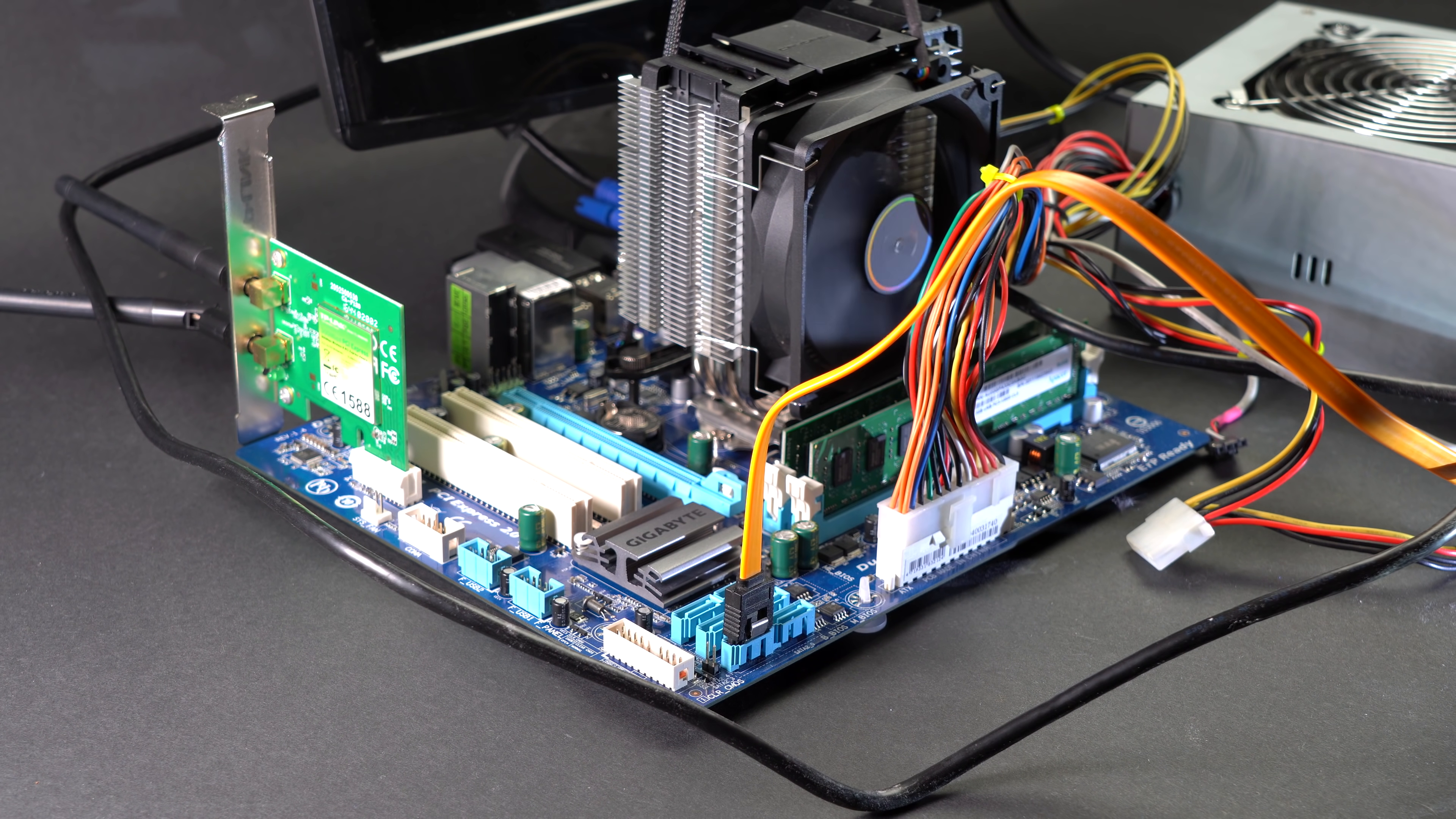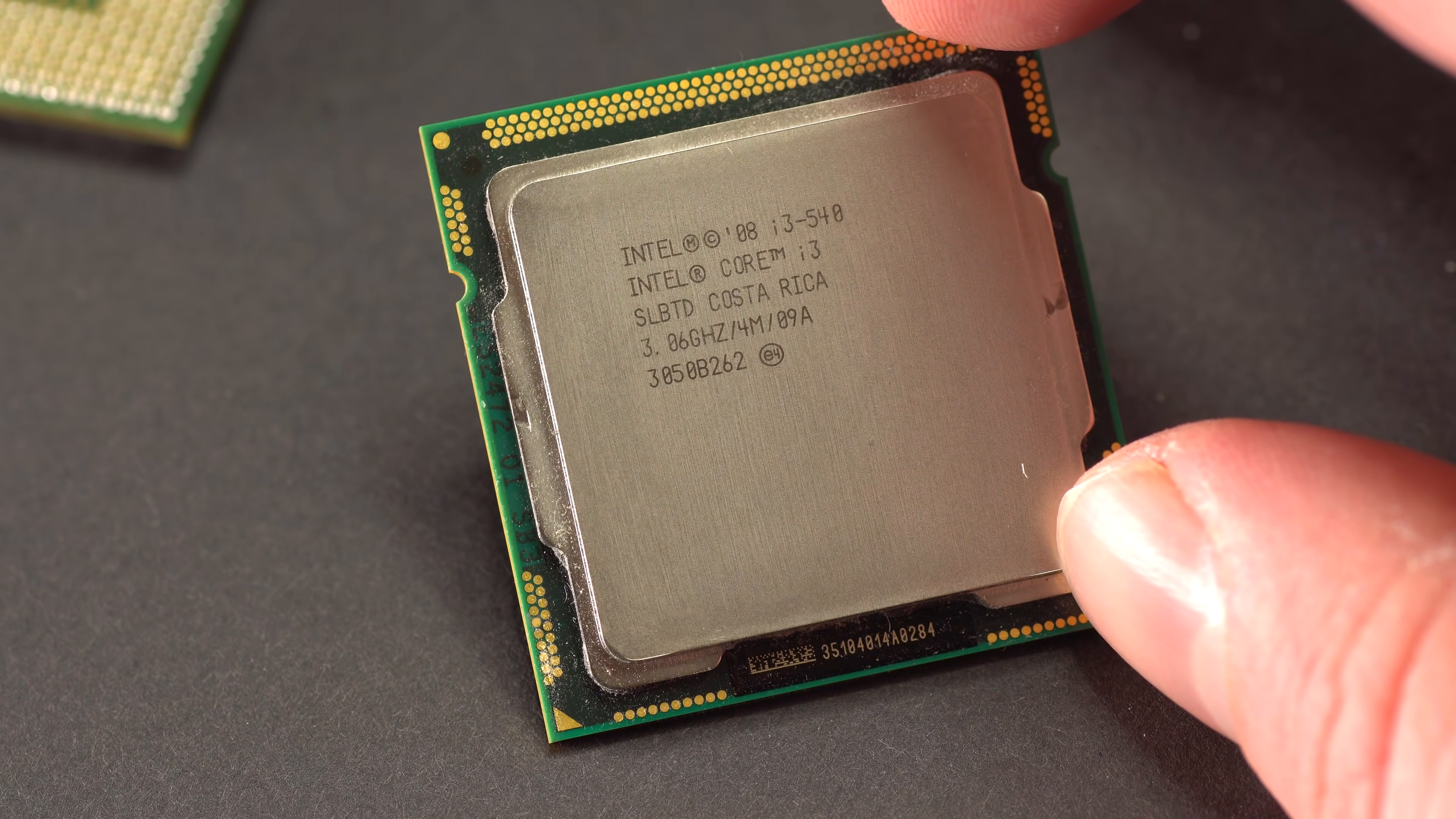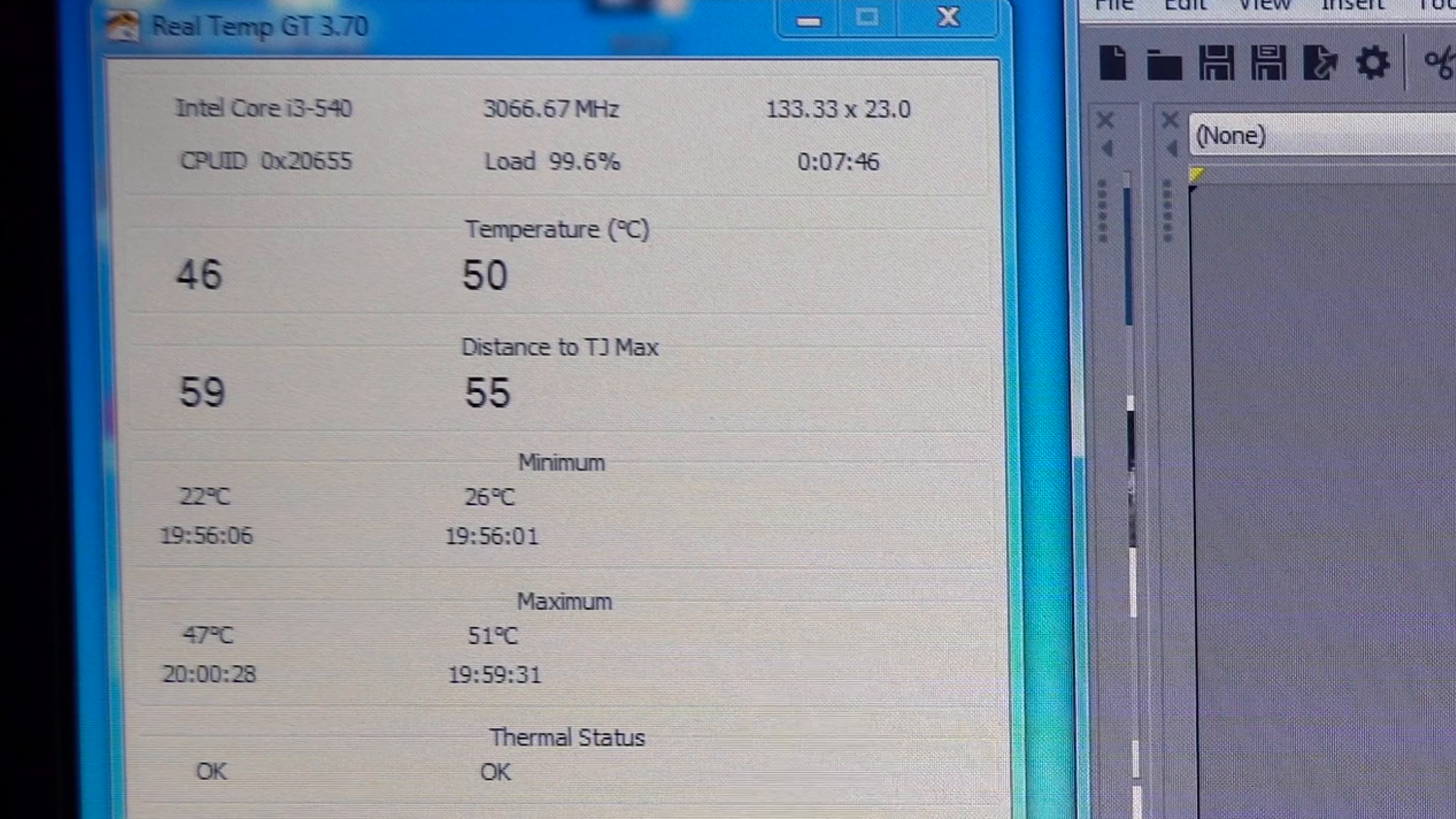It was also interesting for me to check how effectively dry water can cool off a computer processor. To test that I assembled such a testing setup. I am using my old i3 as a processor here. First I measured the temperature of the processor with quite a powerful radiator and regular thermal grease. On average the temperature of the processor reached up to 50 degrees Celsius.